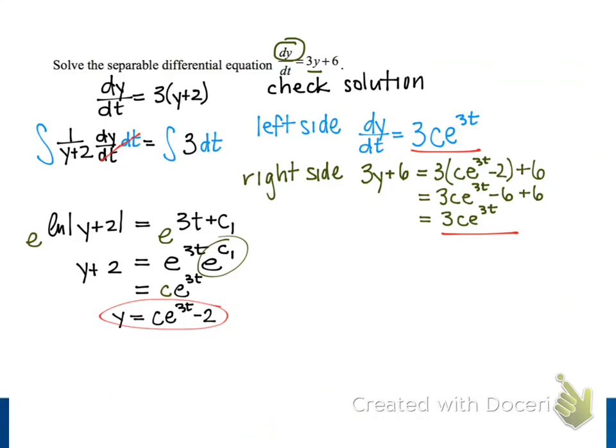We compare these two results, and we see that using our solution for y, the left side and the right side of the differential equation are equal. And so that means our solution y is equal to c times e to the 3t minus 2 is in fact the correct one.